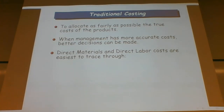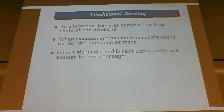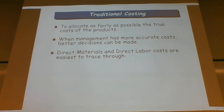Whether we're talking about traditional costing or activity-based costing, the goal is always the same: we want to allocate costs as fairly as possible to each of our products. If we make one product we never have to worry about this, but when we make at least two products this becomes a concern. When management has more accurate cost information, better decisions can be made.